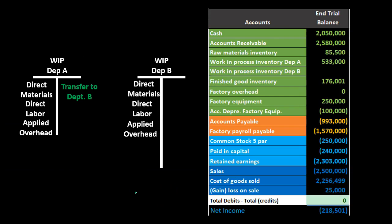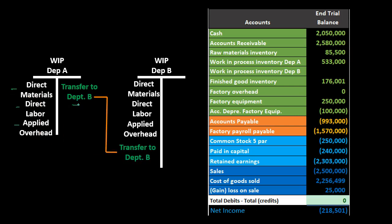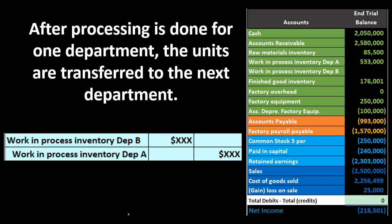Once items are finished in Department A — containing direct materials, labor, and applied overhead — we transfer them to Department B. For the candy example, the candy is made but not yet wrapped, so it moves from Department A to Department B. We credit Work in Process — Department A (asset decreasing) and debit Work in Process — Department B (asset increasing).